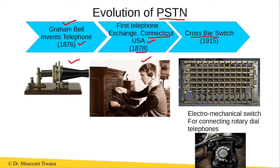The crossbar switch was invented in 1915. It was an electromagnetic switch. At that time, rotary dial telephones were used. When a user wanted to dial another user, he dialed the number of the called user using the rotary dial. The pulses generated as a result of dialing the number were then used by the crossbar switch to automatically connect the calling telephone to the called telephone.